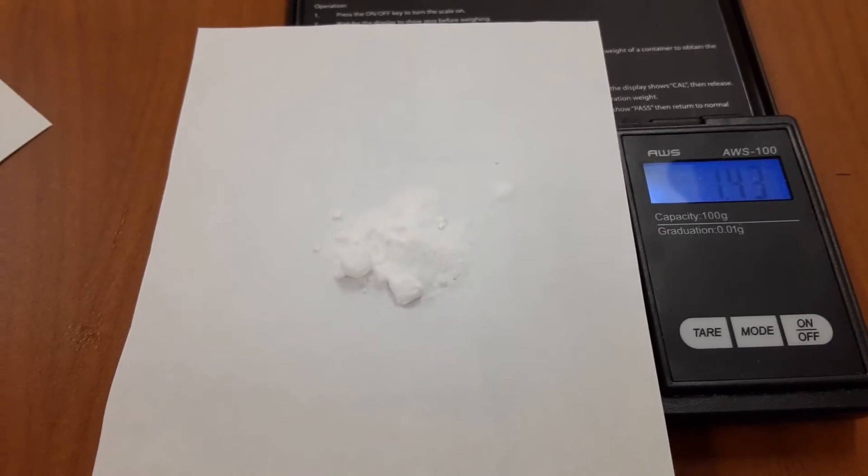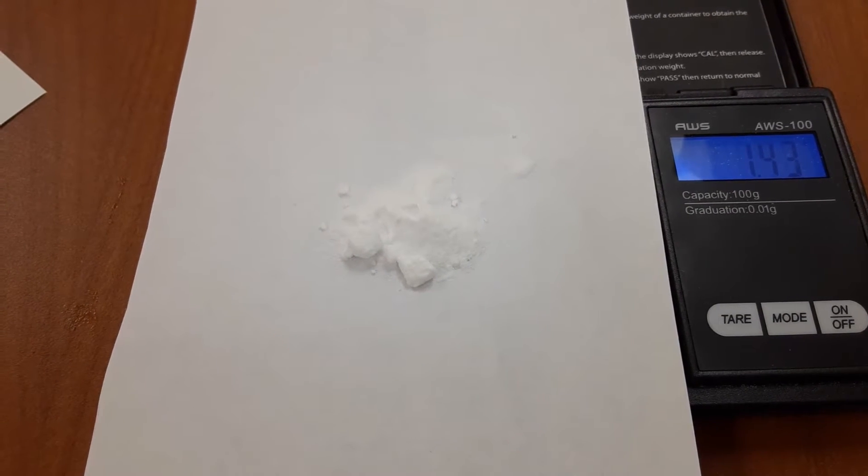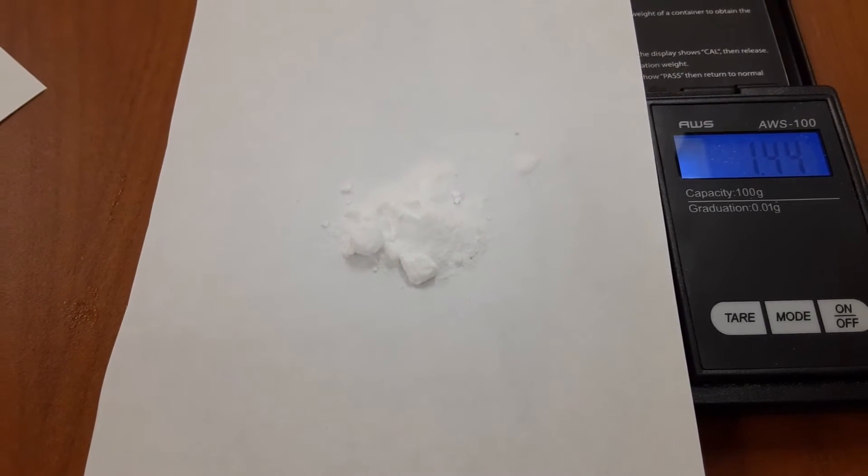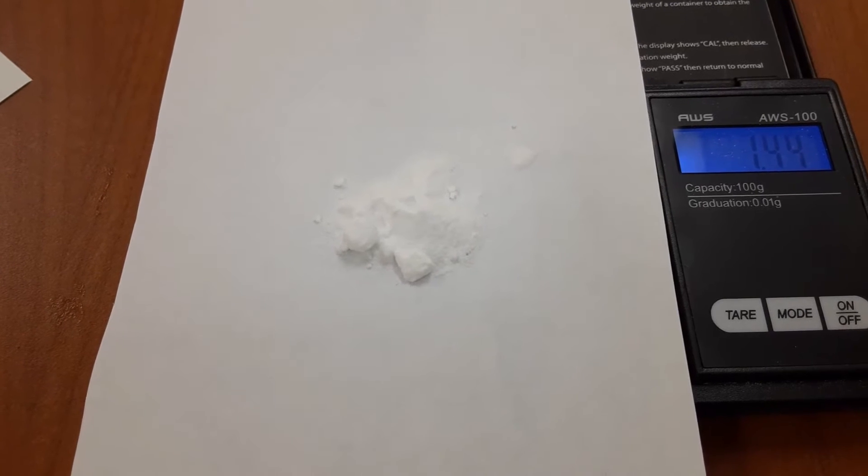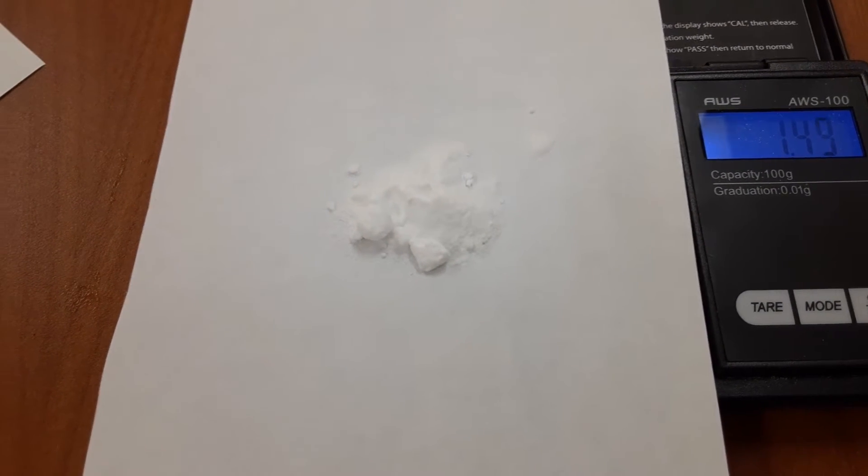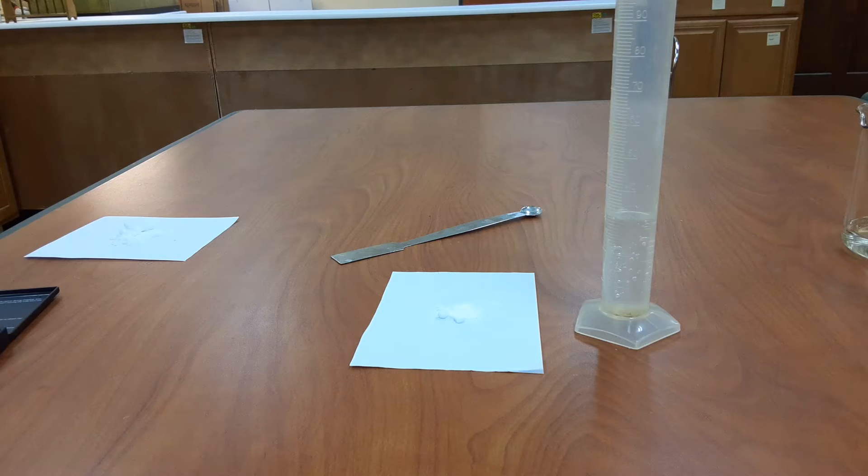So we have m2 equal to 1.44 grams. Please make sure that you write that down. We have our baking soda and we have our vinegar, and we found the masses m1 and m2, so you can add them together. When you add them together, that would be your initial mass. This is the mass of the reactants plus the mass of the graduated cylinder, but we will have the mass of the graduated cylinder also as part of our products, so that doesn't really need to be subtracted. So m_initial is m1 plus m2.